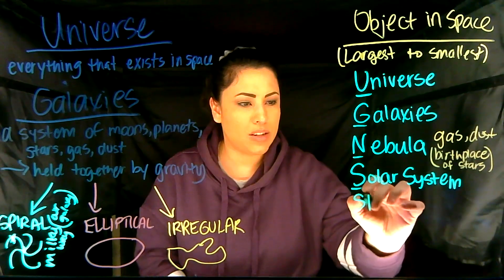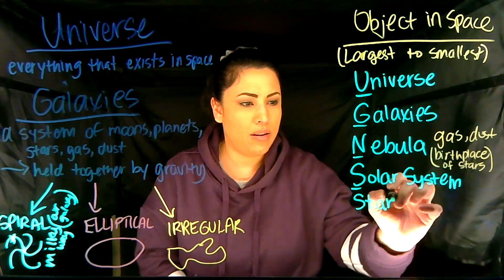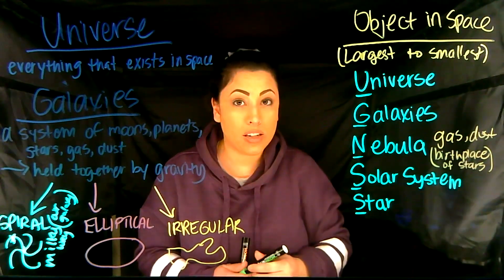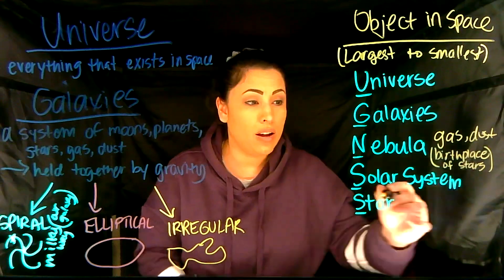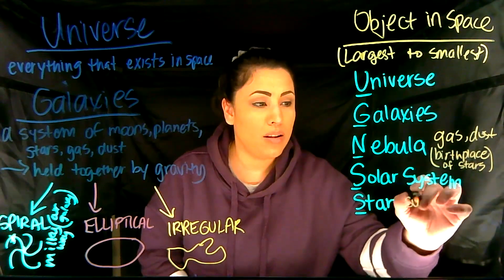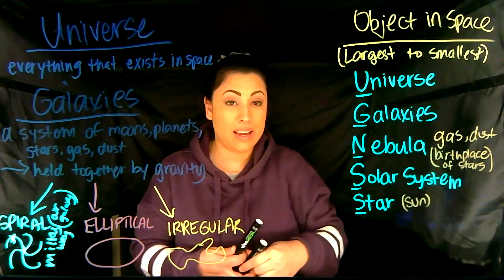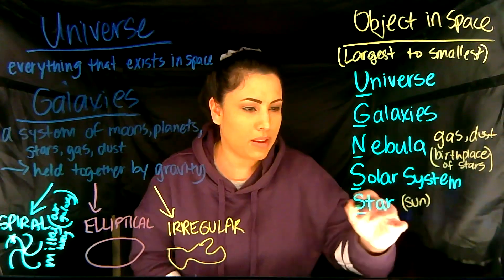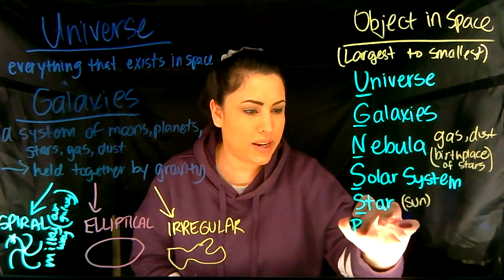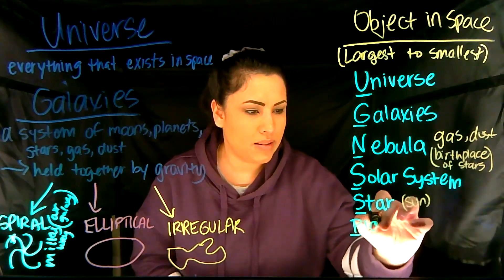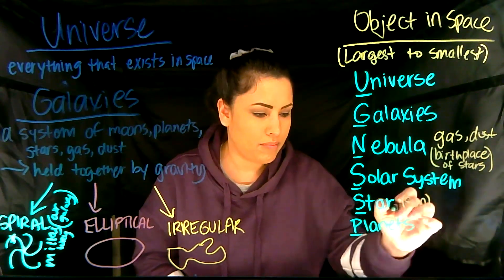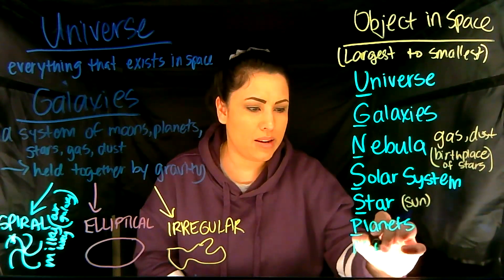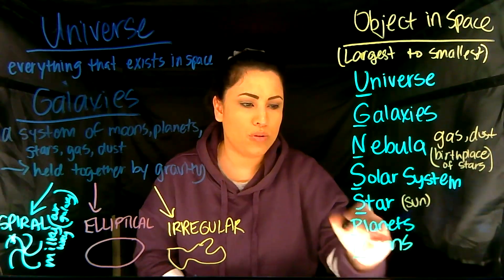Next we have a solar system like ours, then we have a star. Our star is going to be like the Sun, but there are much, much bigger stars out there. Then we have planets and moons.